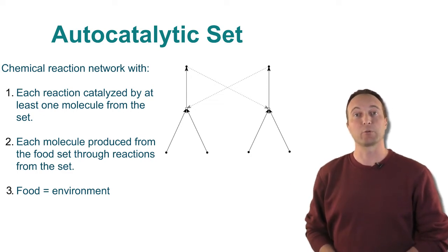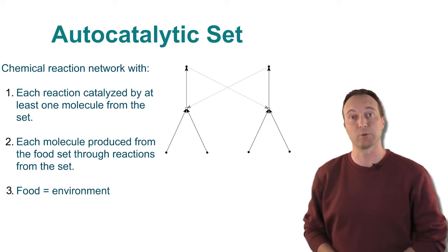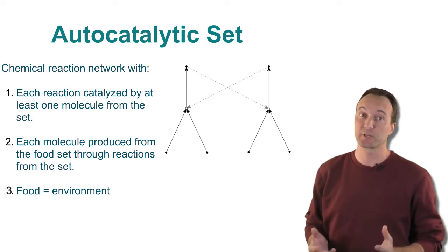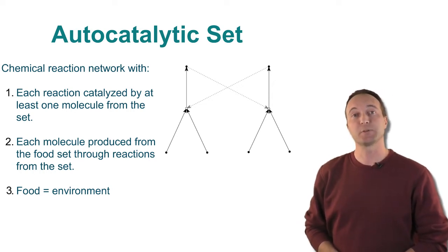Note that this concept of an autocatalytic set captures two essential properties of living systems. First, all chemical reactions are facilitated and regulated by catalysts generated within the network itself. In other words, the system is catalytically closed. And second, it is self-sustaining from resources available in the environment.